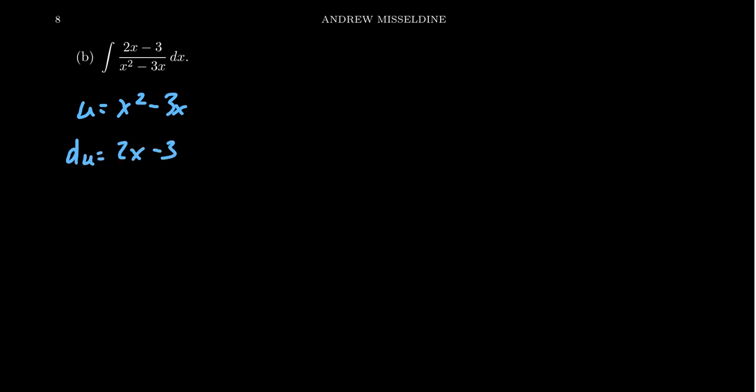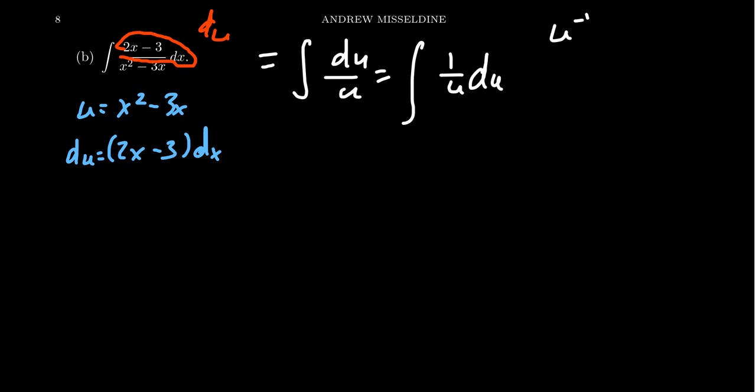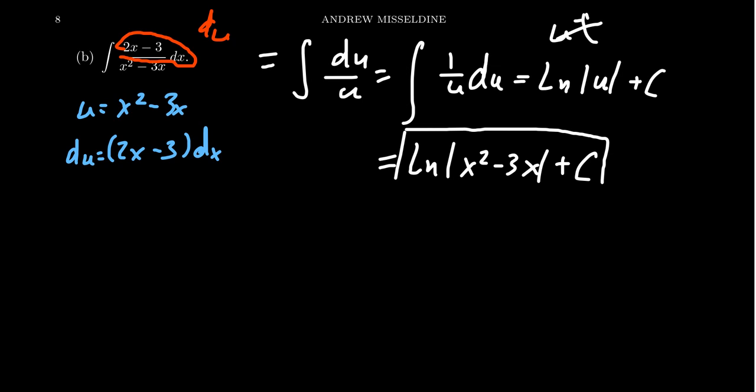Take u to be x squared minus 3x. Well, its derivative is 2x minus 3 dx. And that is exactly what we have in the numerator, right? 2x minus 3 dx. You end up with du. And so then making this u substitution, we end up with du over u, or if you prefer, 1 over u du. Now the power rule doesn't work in this situation because if you did switch this to a power, you get u to the negative one, in which case the power rule doesn't work. In this case, you just want to remember that 1 over u is the derivative of the natural log. So you get the natural log of the absolute value of u plus a constant. And then substitute back in your u, which is x squared minus 3x. So we get the natural log of the absolute value of x squared minus 3x plus a constant. Don't forget the absolute values because x squared minus 3x is not always a positive expression. So you do need to have the absolute value so that the domain is correct.